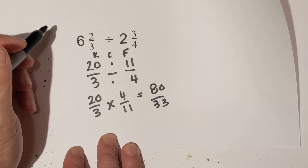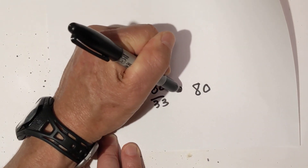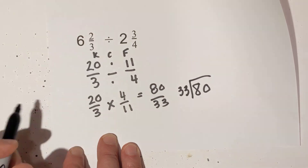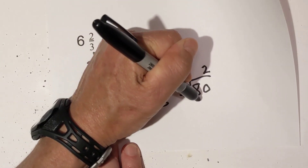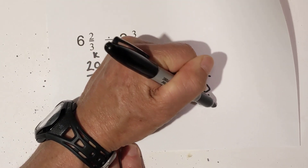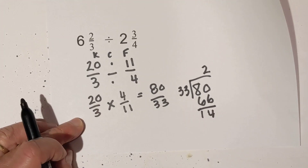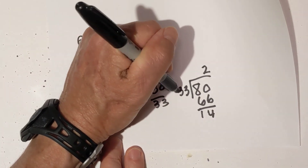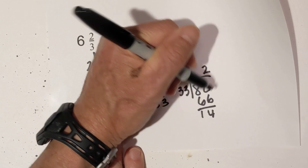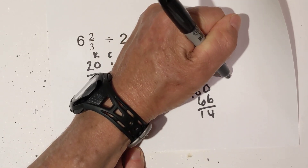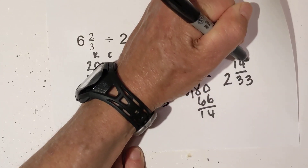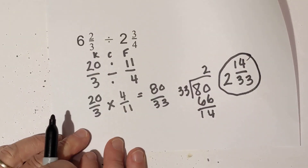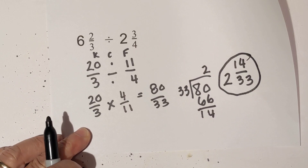Now multiply straight across: twenty times four is eighty, and three times eleven is thirty-three. Convert back to a mixed number — eighty divided by thirty-three. Thirty-three goes into eighty twice, which is sixty-six; eighty minus sixty-six is fourteen. So the answer is two and fourteen thirty-thirds. Thirty-three is a prime number, so that's fully reduced.